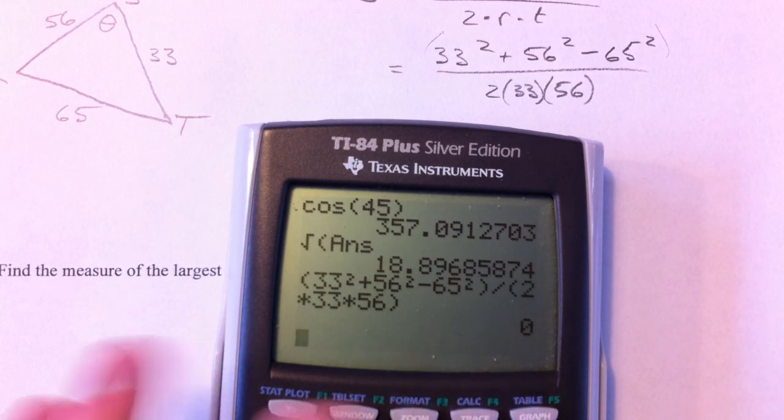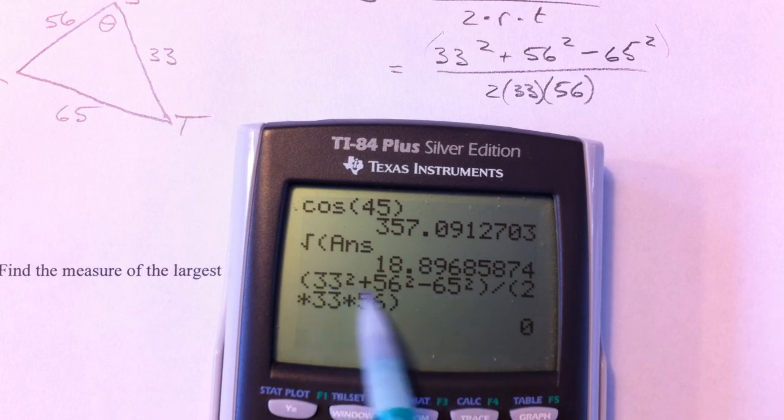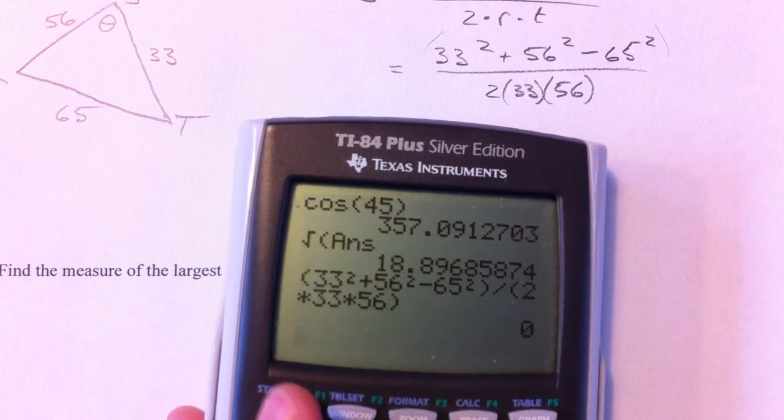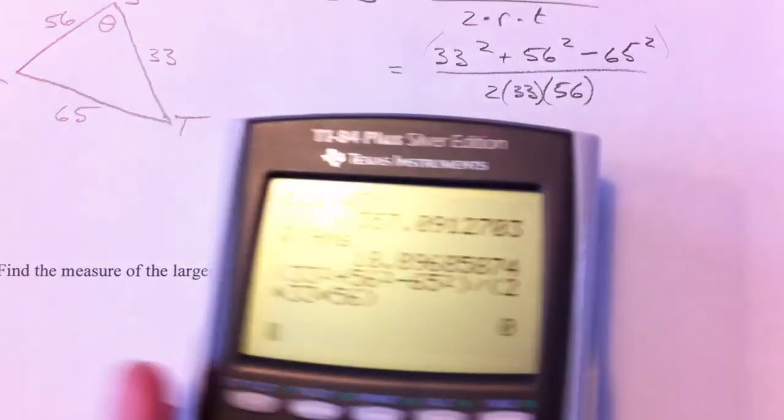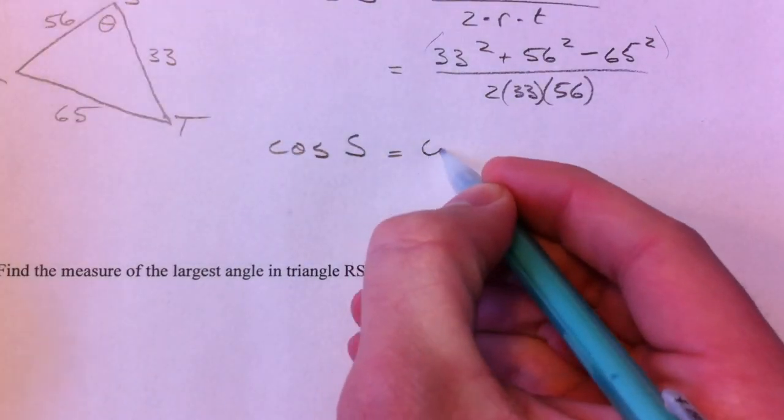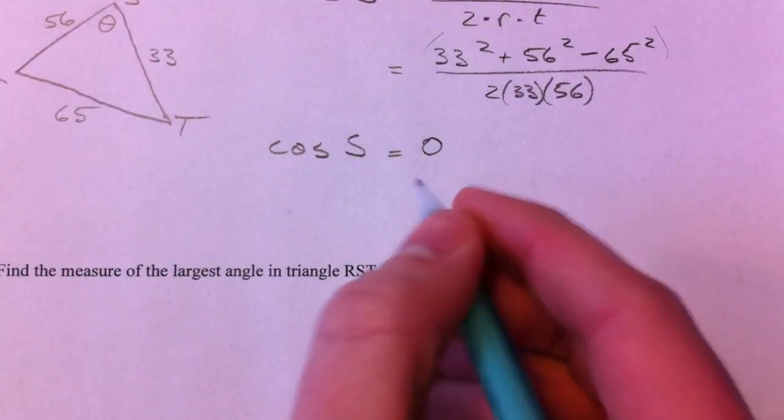So we get zero. Everything canceled out. Must have been a² plus b² minus c² was equal to zero. Zero divided by anything is still zero. So that's kind of crazy. But what does that tell us? Well,